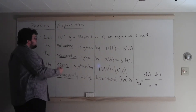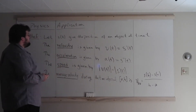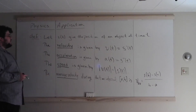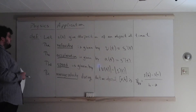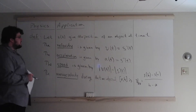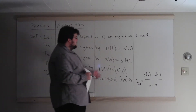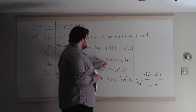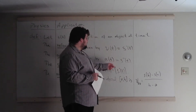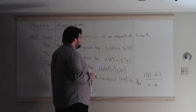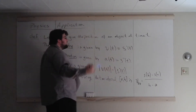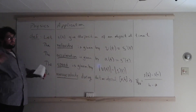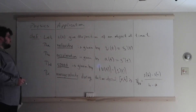That's velocity at time t — the velocity of the object at time t. The acceleration of the object at time t is given by a of t. We're going to use that notation for the acceleration, and it's given by the second derivative of the position function, or the derivative of velocity.